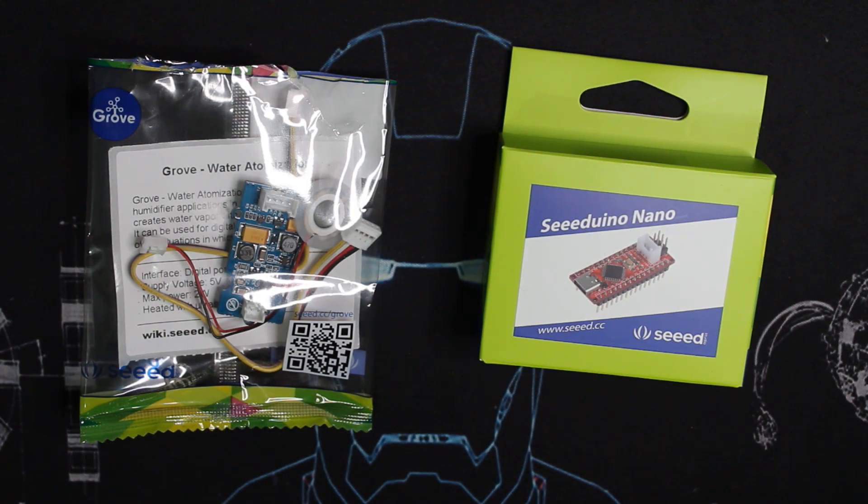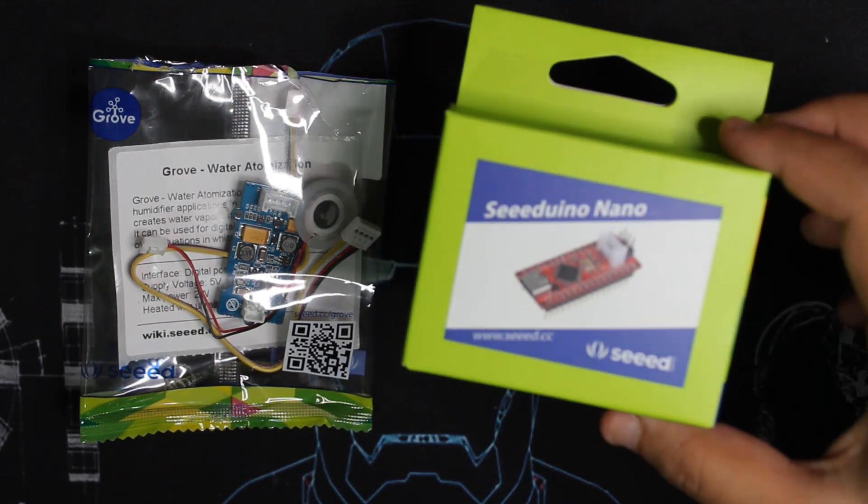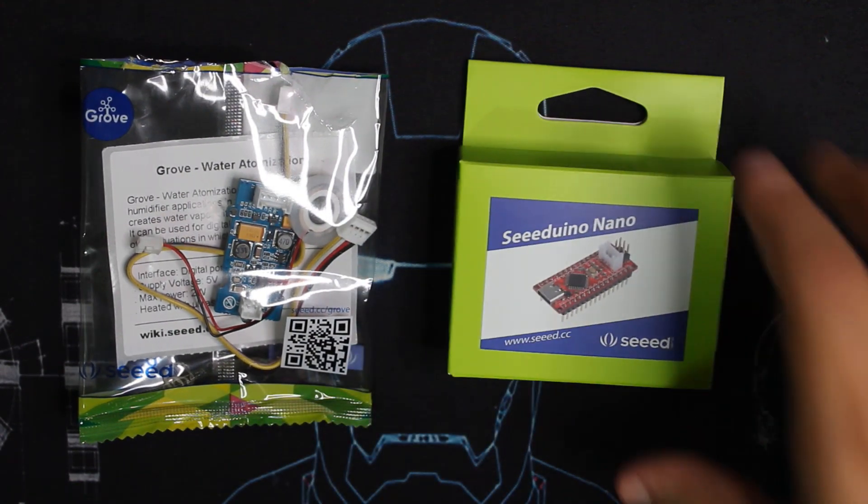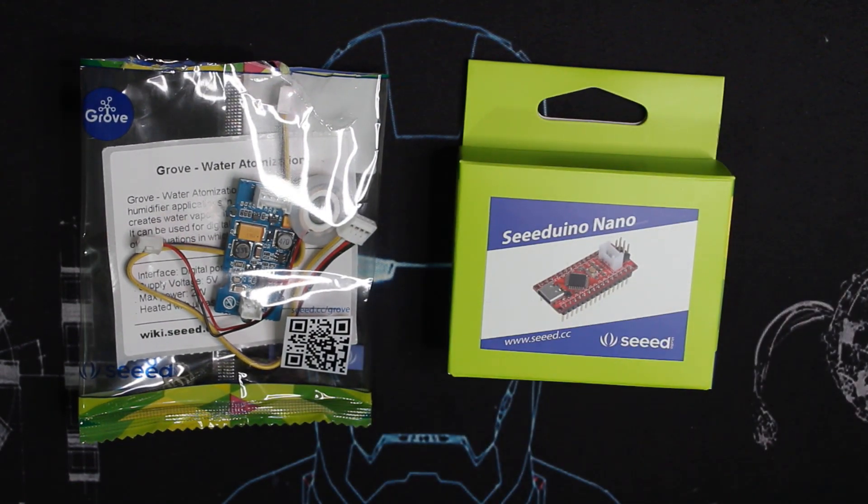Today we're using the Seeeduino Nano board and the Grove water atomization module. Of course, we're going to make a project out of them using other modules too.